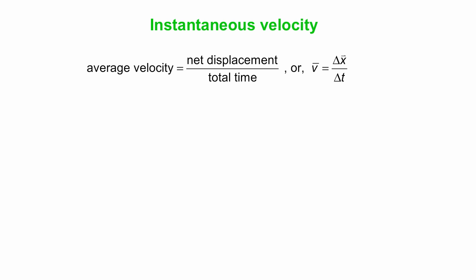Okay, so let's think about instantaneous velocity. So here's our equation. Average velocity is net displacement over total time, or we can write it in a much more compact form. V with a bar on top, a little bar on top represents average of a quantity, is delta x, the x has a vector symbol on top, divided by delta t.